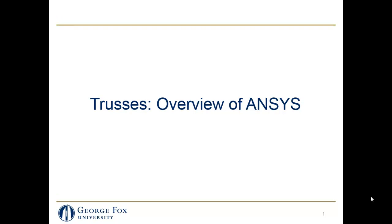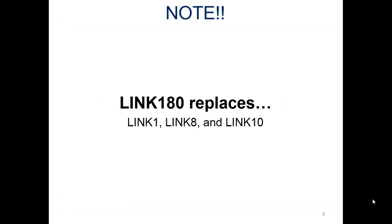One thing I want to cover first is the link — the member we're going to use. It used to be link one, and this changed about five years ago. This is 2016 when I'm recording this. Link 180 is what we're going to use. So if you're looking at old books, you'll see we should be using link one for a 2D member. Well, it was replaced by link 180 around 2010, and I'll show you that very soon after we start the program.